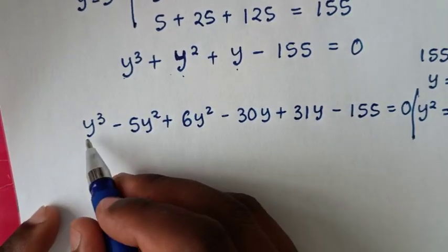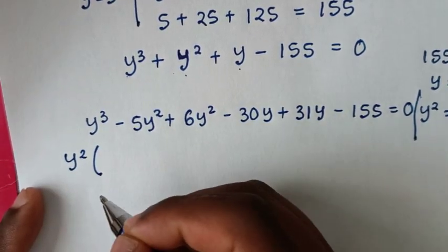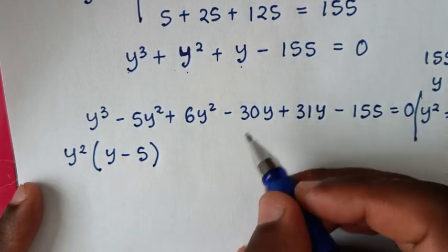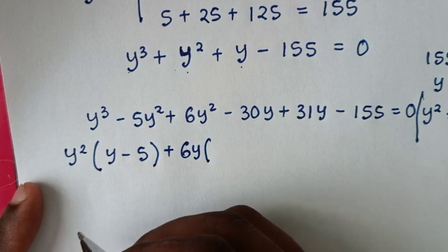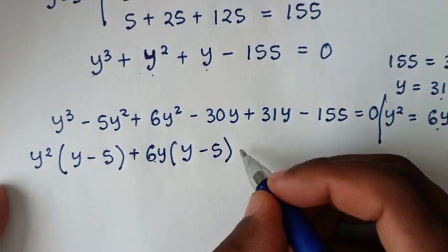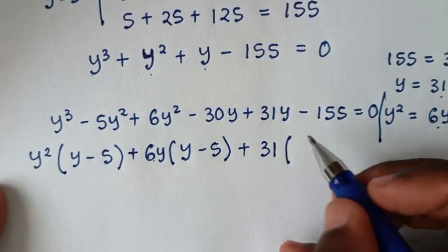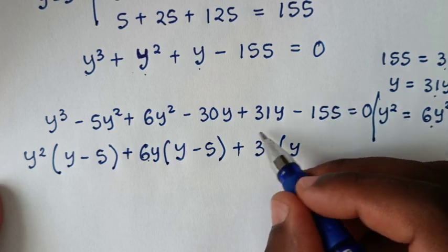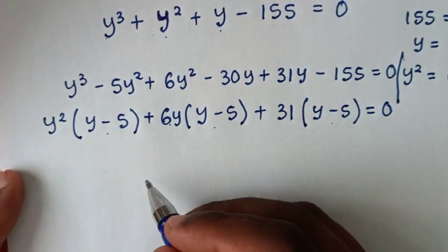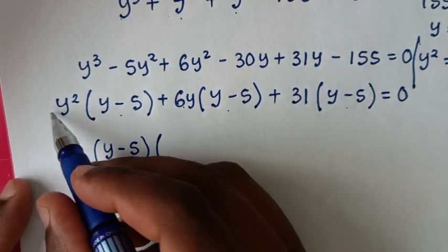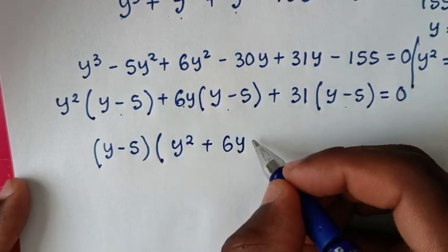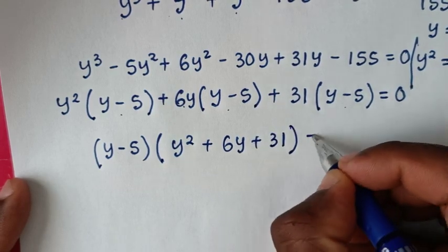In the next step, from the first two terms y squared is common, so we factor it out: y squared times (y minus 5). From the next two terms, 6y is common: 6y times (y minus 5). From the last two terms, 31 is common — since 31y divided by 31 is y, and 155 divided by 31 is 5 — giving 31 times (y minus 5). All equals 0.